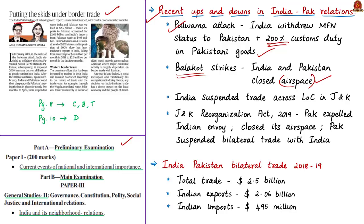Airspace is the space above a nation's territory controlled by its government. According to the Outer Space Treaty of 1967, outer space begins above 100 kilometers from the planet and is free for everyone, though the exact boundary between airspace and outer space is not clearly defined. Pakistan kept the airspace ban for nearly five months. In April 2019, India also suspended trade across the Line of Control in Jammu and Kashmir, citing misuse by Pakistani-based elements to smuggle weapons, drugs, and fake currency.